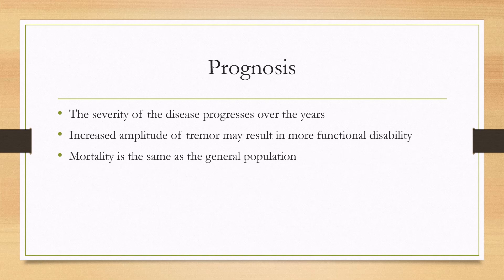The main contraindication to surgical treatment is dementia or major cognitive impairment. For prognosis, the severity of essential tremor generally progresses over the years, and an increased amplitude of the tremor may result in more functional disability. Luckily, mortality is the same as the general population.